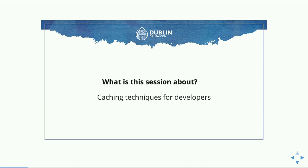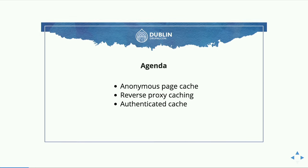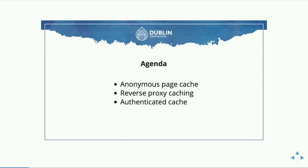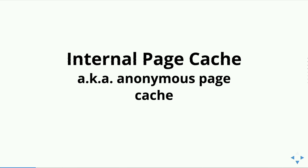There are three types of caching that should matter for developers in Drupal 8 — just my way of categorizing them. First, there's anonymous page cache, which we all know from Drupal 7 and 6. Second, reverse proxy caching — I'll touch very little on that, that's our Varnish layer. Third, authenticated cache, which is one of the biggest deals in Drupal 8.